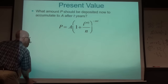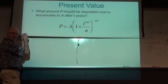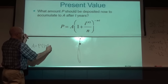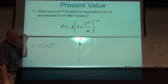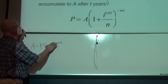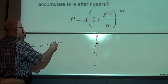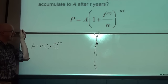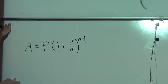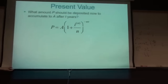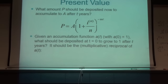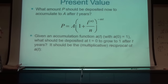Going back to the original compound interest formula and solving it for P: multiply both sides by (1 + i/N)^(-NT) to get P = A · (1 + i/N)^(-NT). This answers the question of how much you should deposit now to accumulate to A after a given number of years.